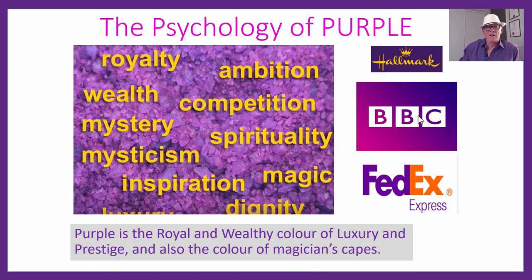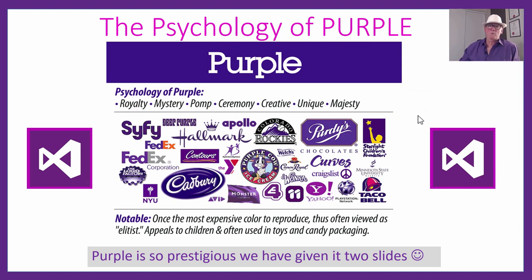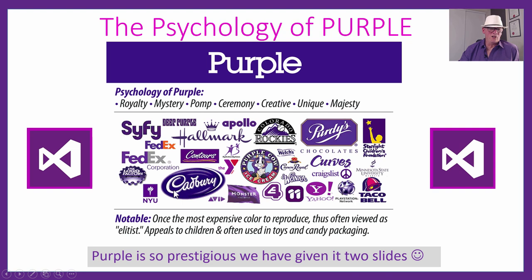Purple is a really interesting color — the color of royalty, but also magicians' capes for mystery, and wealth and prestige. Because purple is so awesome, we've got two slides here for it. The old Visual Studio has a purple logo, which is interesting for the psychology of color. And Cadbury chocolate — you guys in America, forget Hershey's and get onto the Cadbury stuff like we have here in Australia.